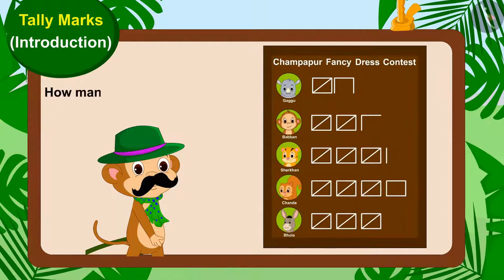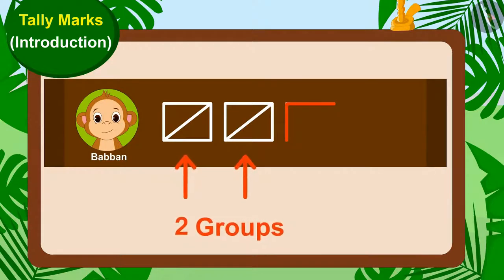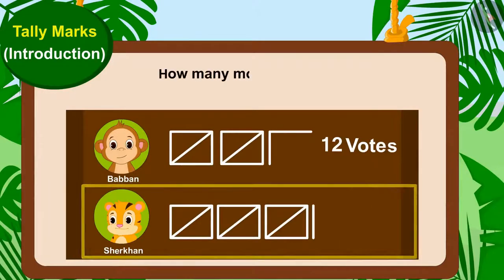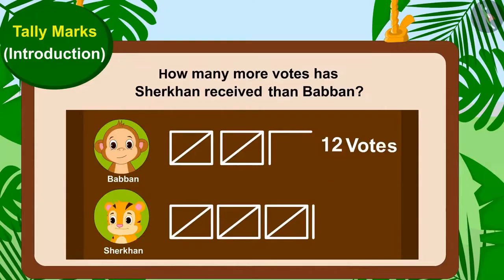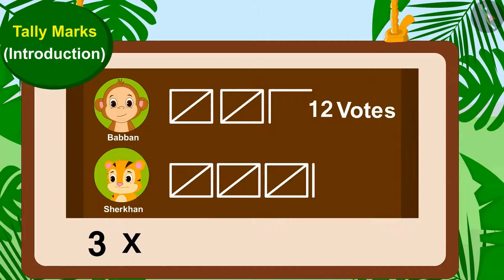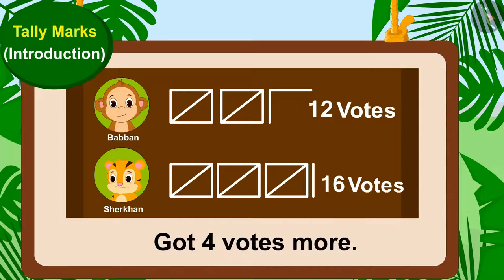Children, can you tell us how many votes Babban has got? Yes, absolutely right. There are two groups of tally marks and two lines in front of Babban's name. This means Babban has got twelve votes. Children, can you tell how many more votes has Shere Khan received than Babban? Shere Khan's votes consist of three groups of tally marks and one line. Shere Khan has got three times five — fifteen — plus one — sixteen votes. And Babban has got twelve votes. This means Shere Khan has got four votes more than Babban.